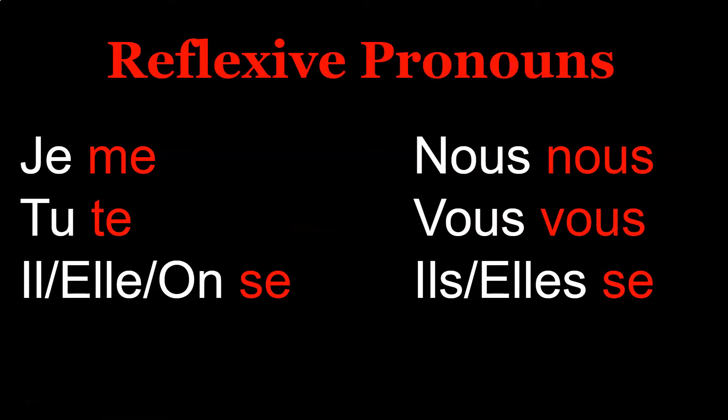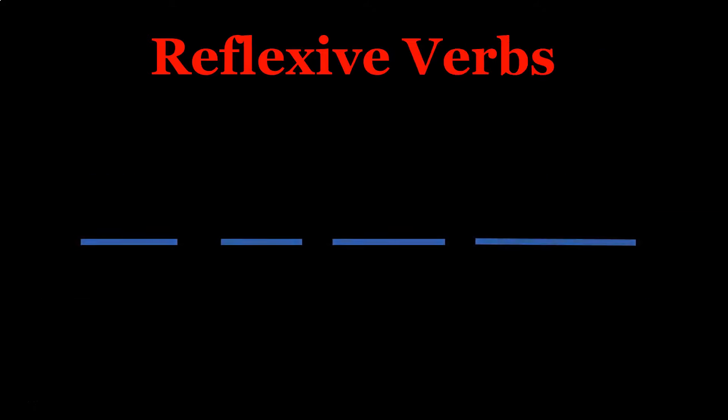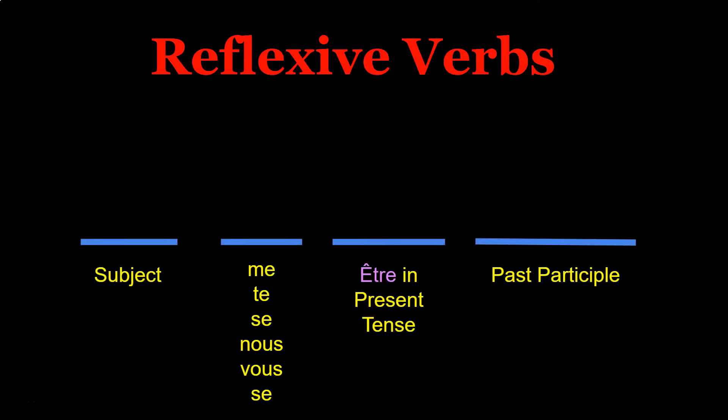The reflexive pronouns are: me for je, te for tu, se for il/elle/on, nous for nous, vous for vous, and se for ils/elles. The formula for conjugating reflexive verbs in le passé composé is: the subject, the correct reflexive pronoun, être in the present tense, and then your past participle.